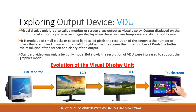The first and main device is the Visual Display Unit, that means VDU. It is also called a monitor or a screen, which gives us the output as a visual display. Physically it looks similar to a television screen and displays both images and text. The output displayed on the monitor is called soft copy, because images displayed on the screen are temporary and do not last forever. They are available in both multicolor and black and white, that means monochrome.